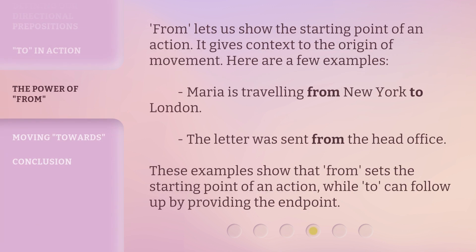From lets us show the starting point of an action. It gives context to the origin of movement. Here are a few examples. Maria is traveling from New York to London. The letter was sent from the head office. These examples show that 'from' sets the starting point of an action, while 'to' can follow up by providing the end point.